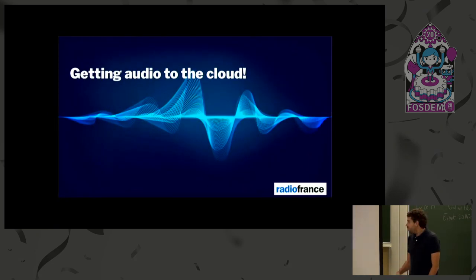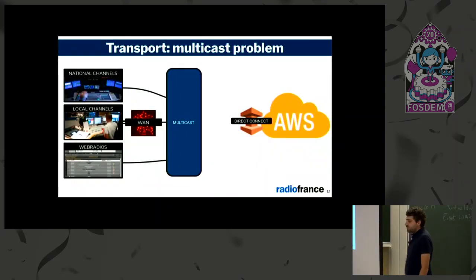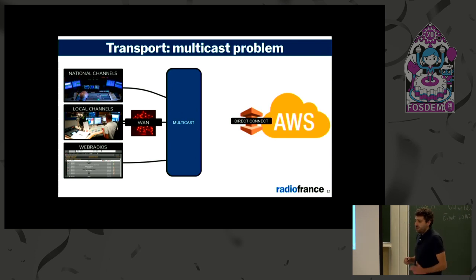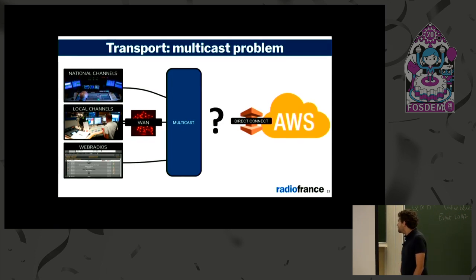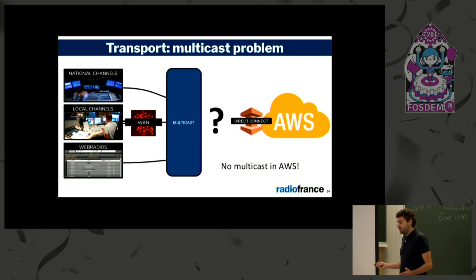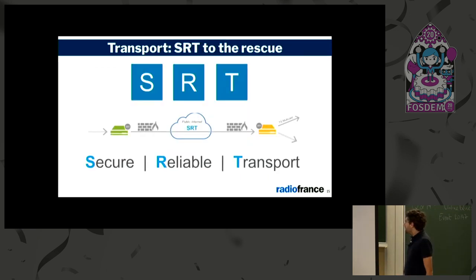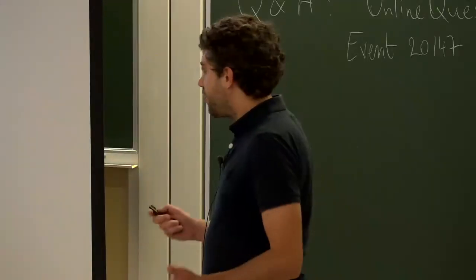First part: how to get the audio to the cloud? At Radio France, the audio is produced in several ways — national, local, and web audio each have their own way of producing audio. But at the end, all of this audio is injected into the multicast network of the home of Radio France. So the first thing we did was create a DirectConnect, which is a dedicated fiber link between the home of Radio France and the cloud. But how do we transport multicast into AWS? There is a problem — there is no multicast in AWS, like in any other major cloud provider.